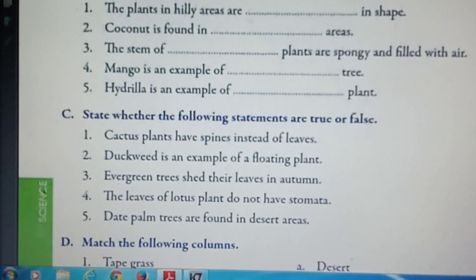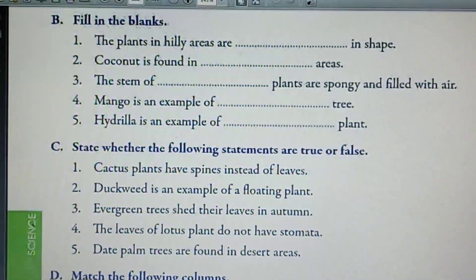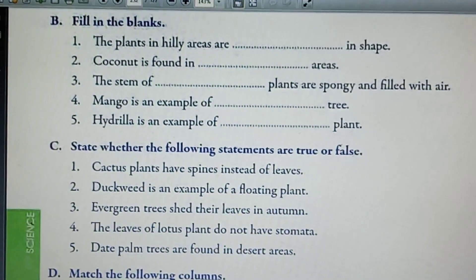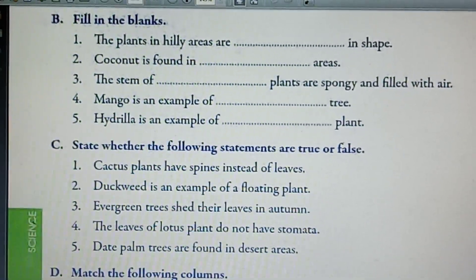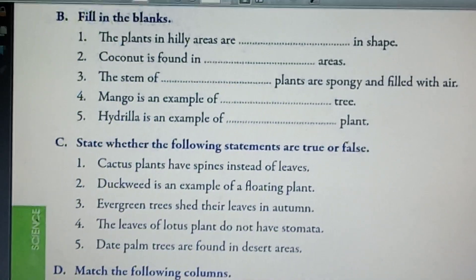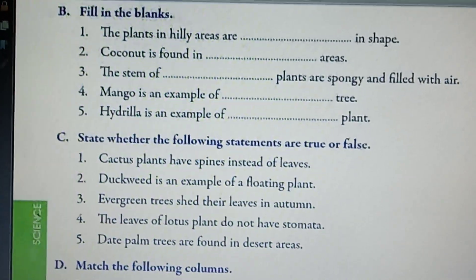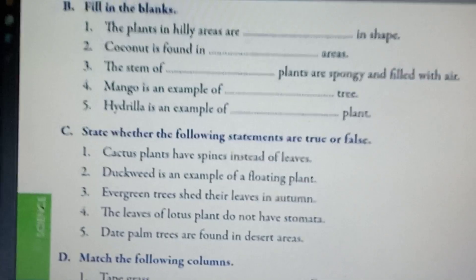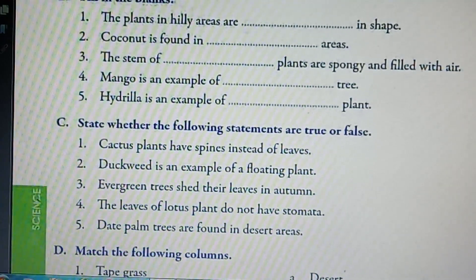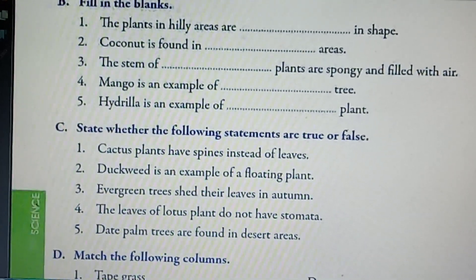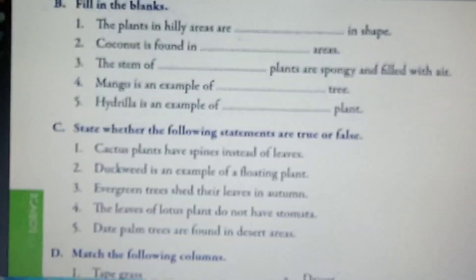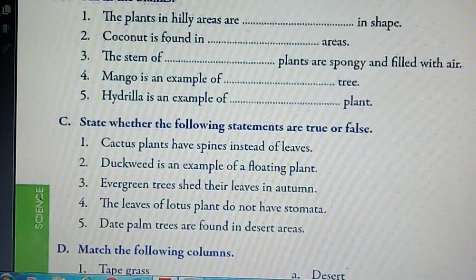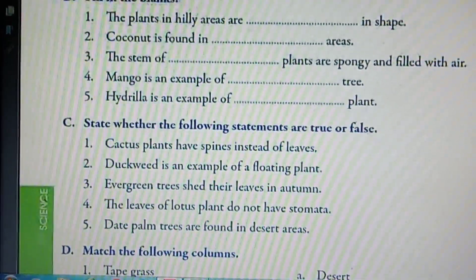Question number 5, fill in the blanks. Number 1: the plants in hilly areas are dash in shape. Answer is conical. Number 2: coconut is found in dash areas. Answer is coastal. Question number 3: the stem of dash plants are spongy and filled with air. Answer is floating plants.